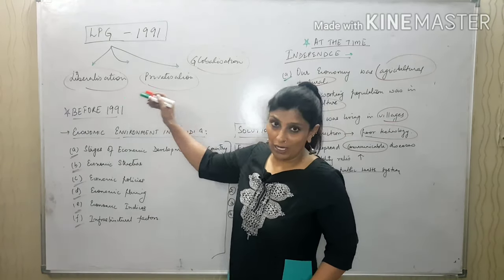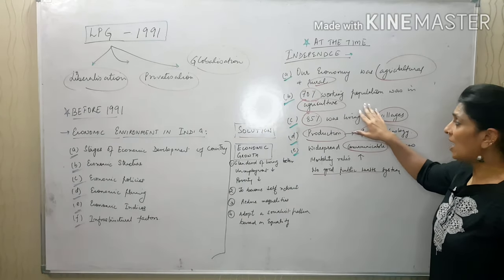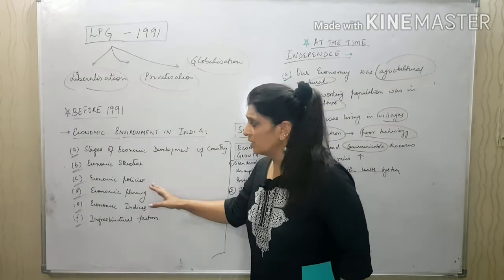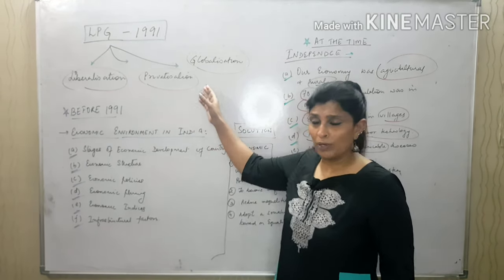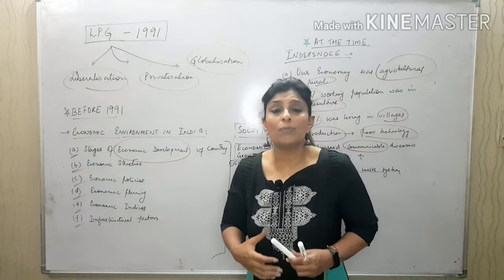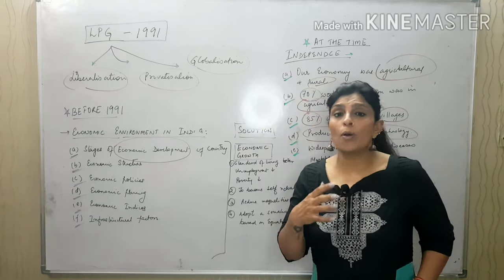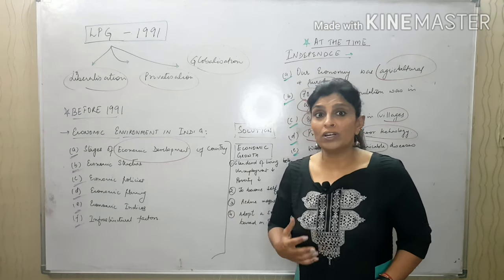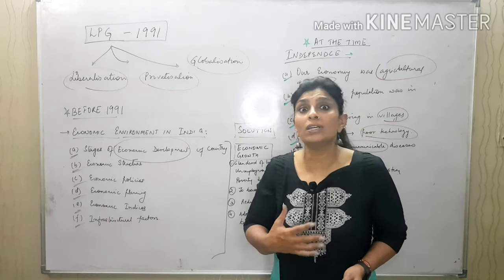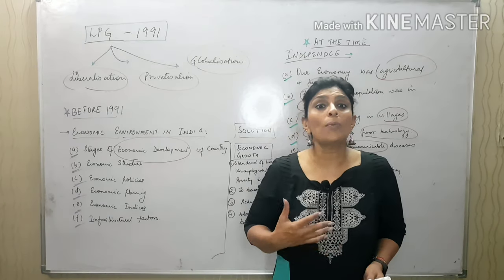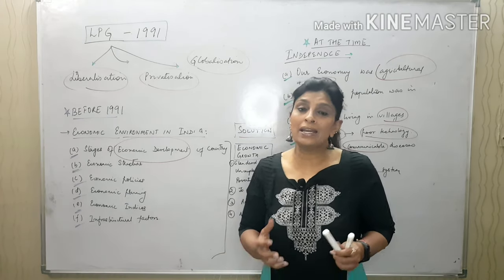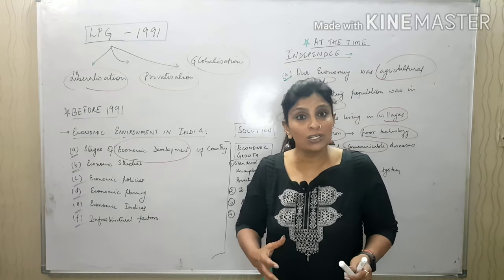Before 1991 — that is before LPG — somewhere around 1947 at independence and through the late 1980s, this was the condition. We initiated liberalization, privatization, and globalization because we wanted economic development. Our economic growth rate was not high, so we wanted a better standard of living, availability of goods that Western countries were using, and a more stable economic structure. We had a mixed economy, but the private sector was not growing much compared to the public sector.